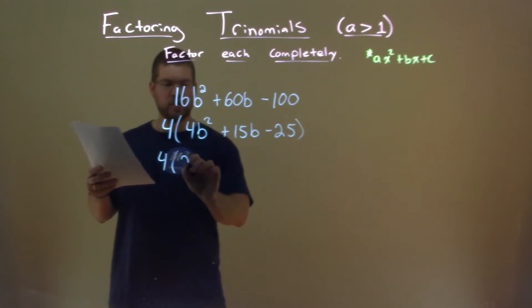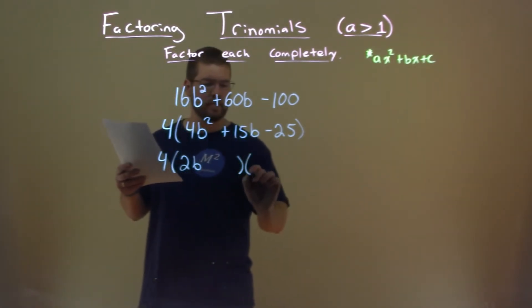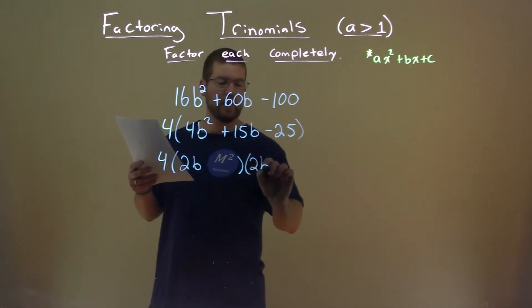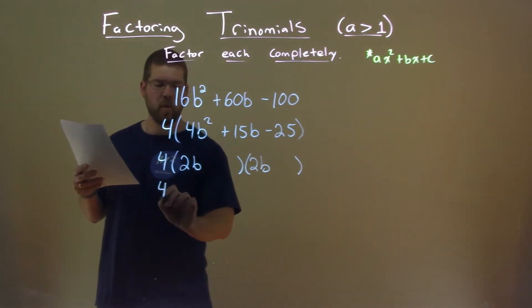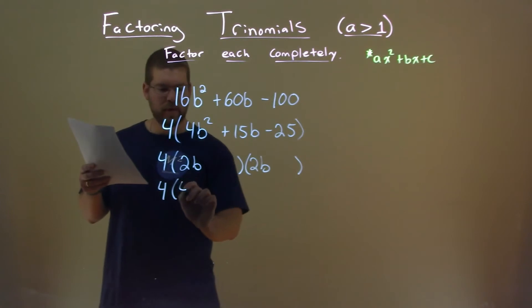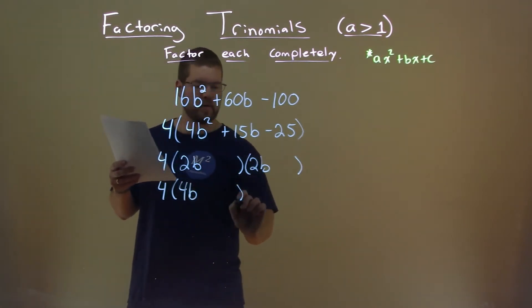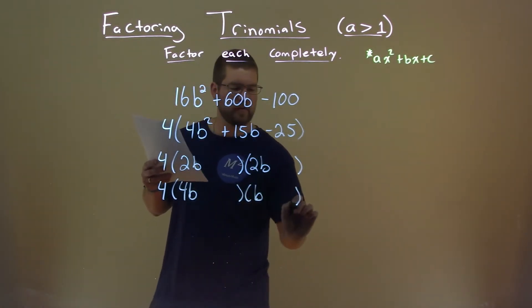It can either be 2b plus or minus something times 2b plus or minus something else, that gives us that 4b squared. Or it can be in the form of 4b plus or minus something times 1b plus or minus something else.